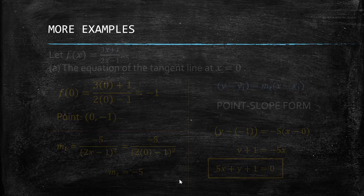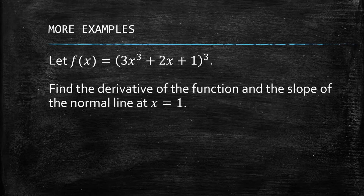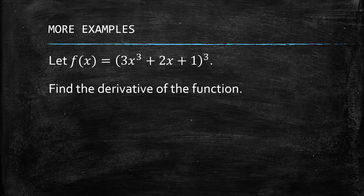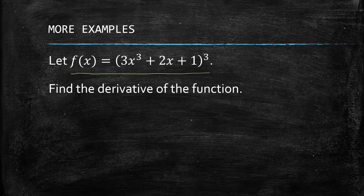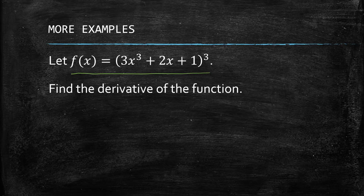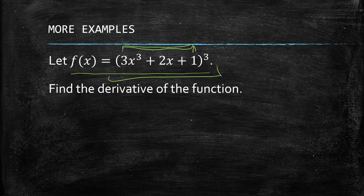Let's have another example: f(x) = (2x³ + 2x + 1)³. Find the derivative of the function and the slope of the normal line at x = 1. Observing the given, we can see that we need to use the chain rule here. We know we need chain rule because of the inner function — we have an outer function and an inner function, indicating the existence of a composite function, a function within a function.